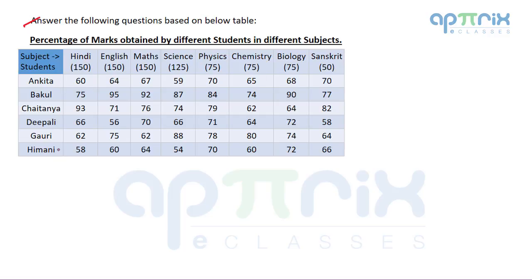The students are Ankita, Bakul, Chaitanya, Dipali, Gauri, and Himani. The subjects are Hindi, English, Math, Science, Physics, Chemistry, Biology, and Sanskrit. One important thing to understand is that the values written in this table are all in percentage.